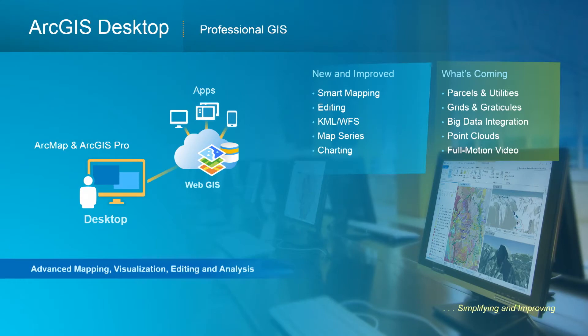Desktop is basically professional GIS, and from the surveys I know something about you — virtually everybody in the room is using desktop. It consists of two basic applications: ArcMap and ArcGIS Pro. ArcMap will continue to be supported and enhanced long into the future. On the other hand, we are investing heavily in ArcGIS Pro, which ultimately will replicate the features and functions of ArcMap.